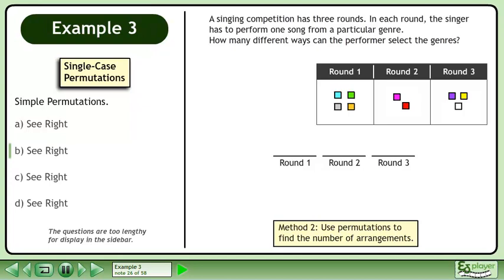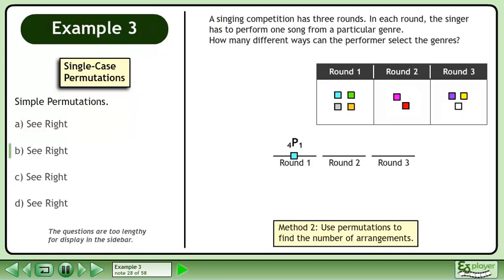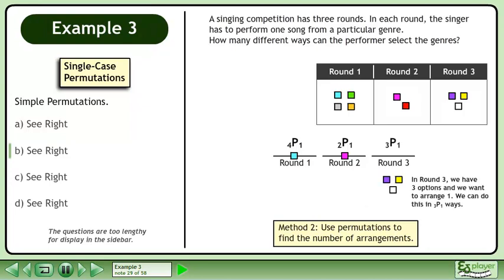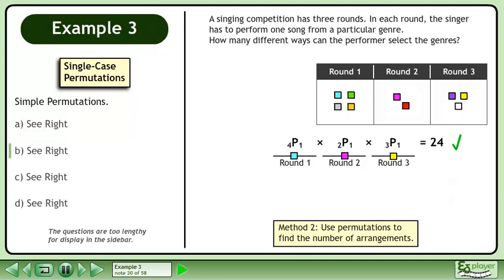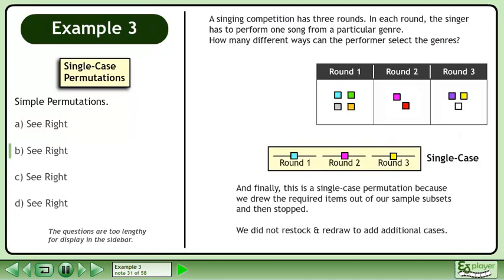In Method 2, use permutations to find the number of arrangements. In Round 1, we have 4 options and we want to arrange 1, so we can do this in 4P1 ways. In Round 2, we have 2 options and arrange 1, giving 2P1 ways. In Round 3, we have 3 options and arrange 1, giving 3P1 ways. Multiply to get the answer 24. This is a single case permutation because we drew the required items out of our sample subsets and then stopped. We did not restock and redraw to add additional cases.